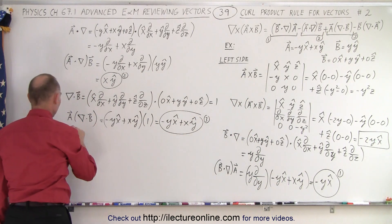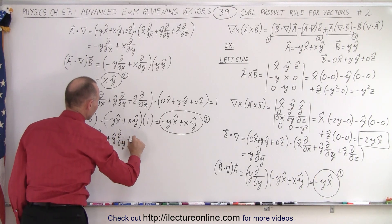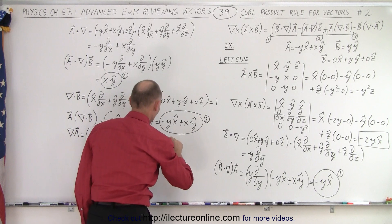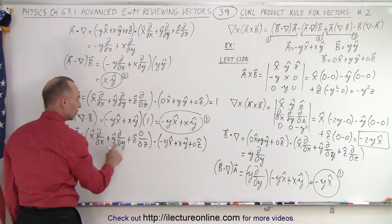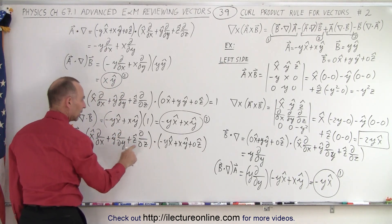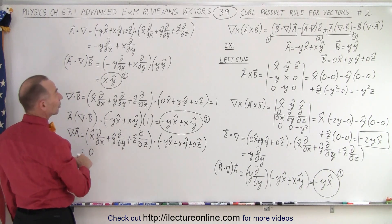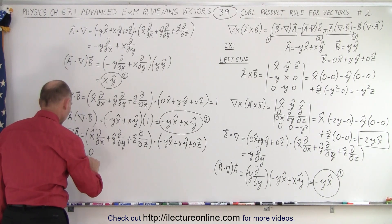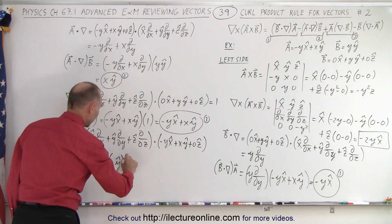Now the divergence of a: the partial with respect to x of minus y is 0, the partial with respect to y of x is 0, and the partial with respect to z of 0 is 0. So the divergence of a equals 0. Multiplying b times the divergence of a, we get the b vector, which is y times the y unit vector, multiplied by 0, which is simply 0. That is result number 4.